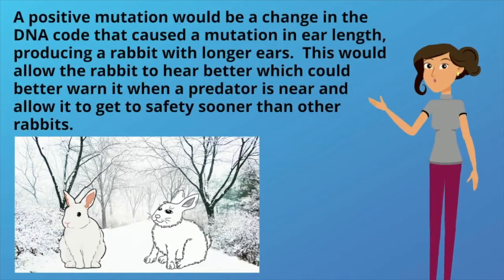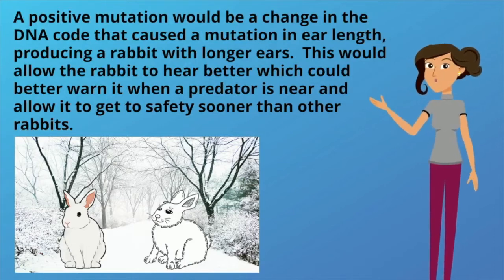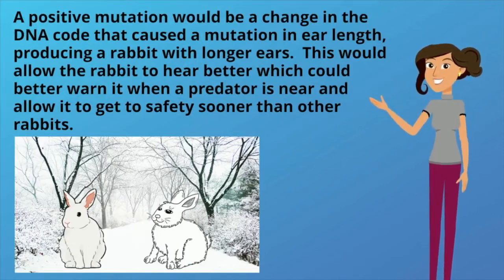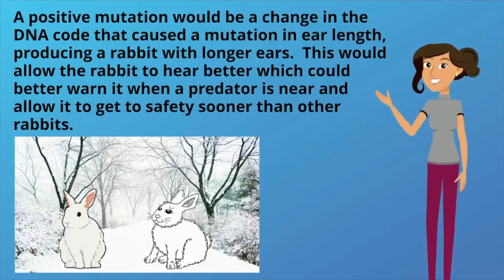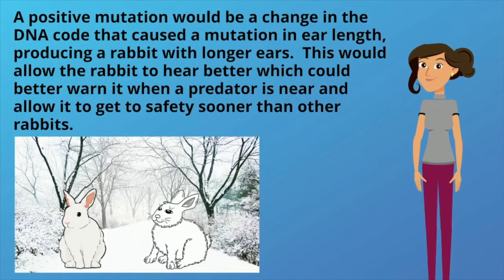A positive mutation could be a change in the DNA code that caused a mutation in ear length, producing a rabbit with longer ears. This would allow the rabbit to hear better, which could better warn it when a predator is near and allow it to get to safety sooner than the other rabbits.